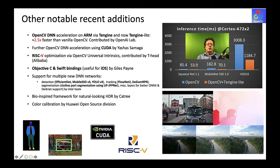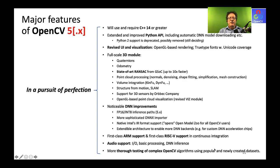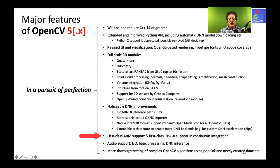Major features coming with OpenCV 5.0 include moving to C++14 support, a much better Python API, better UI and visualization, a comprehensive 3D module with state-of-the-art RANSAC as default, deep net improvements that are faster, more robust ONNX support, first-class ARM and RISC-V support, audio support, and much more thorough testing.